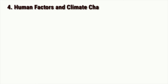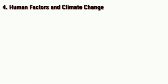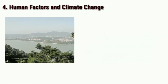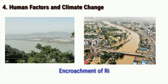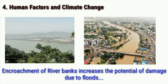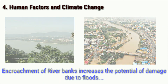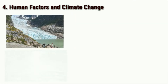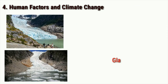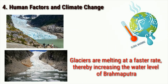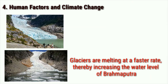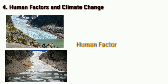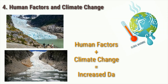Lastly, the human factors and climate change. With the encroachment of river banks, more and more people are living close to the river, which leads to increased potential of damage caused by floods. Also, we cannot forget the impact of climate change in the eastern Himalayas — the glaciers are melting at a faster rate, increasing the water level of the river Brahmaputra. Simply put: human factors plus climate change equals increased damage.